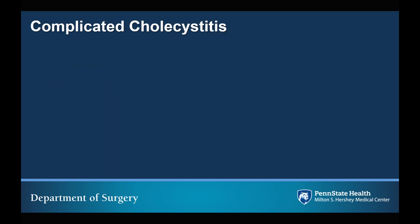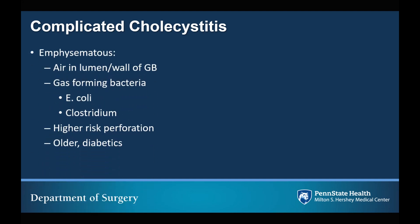The first special case of complicated cholecystitis is emphysematous cholecystitis. This is noted on imaging when you can see air in the lumen or wall of the gallbladder, resulting from gas-forming bacteria such as E. coli or Clostridium. Emphysematous cholecystitis is particularly notable because these patients are at higher risk of perforation of the gallbladder resulting in more widespread infection, and in general these patients are older and diabetic.